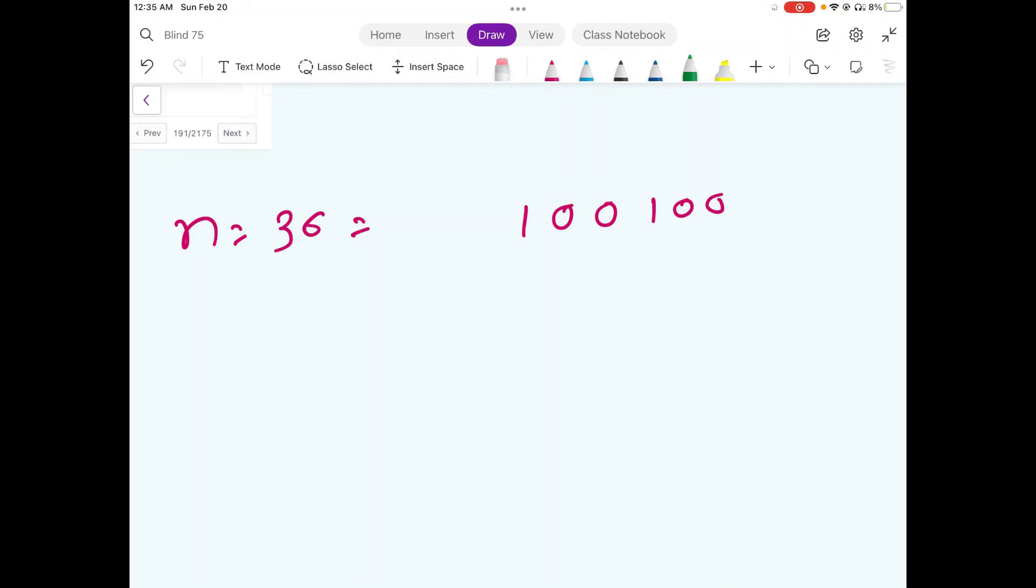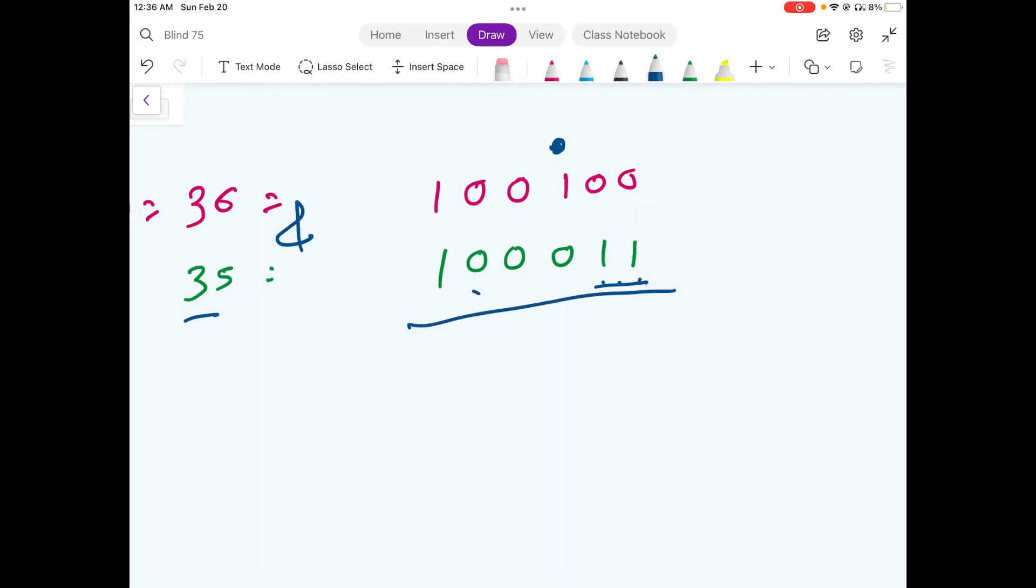Now, the intuition behind this solution is that if we take one value lesser than 36, let's say 35. And if we represent this value in binary terms, the binary representation looks like this and notice that the first one that we encountered on our original input, the one value lesser than that has the exact opposite in terms of number of ones up until this point.